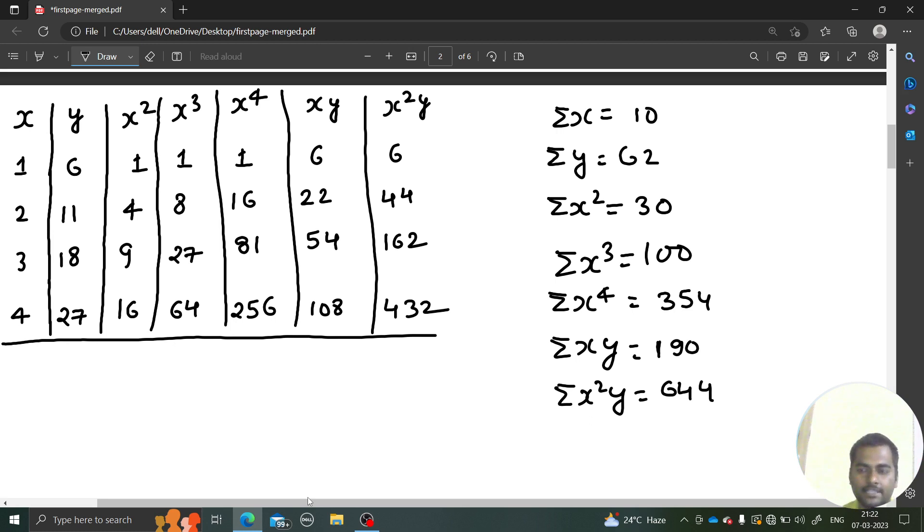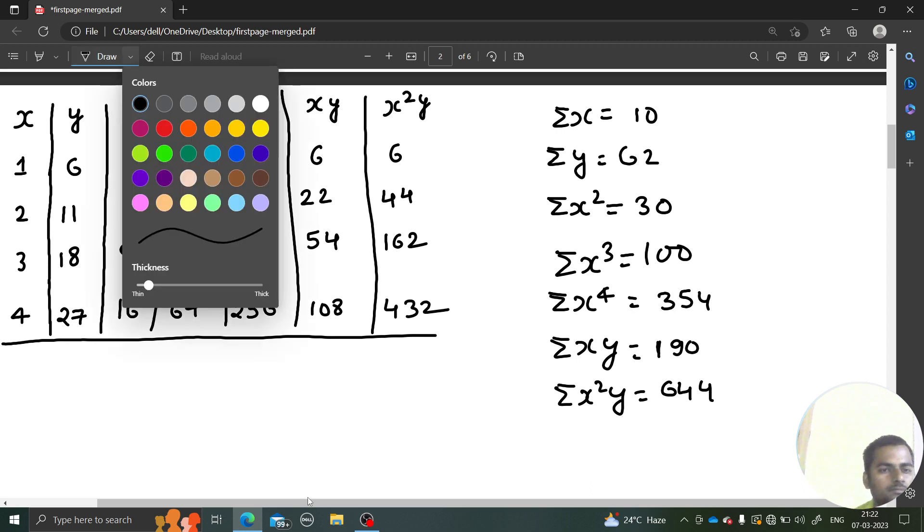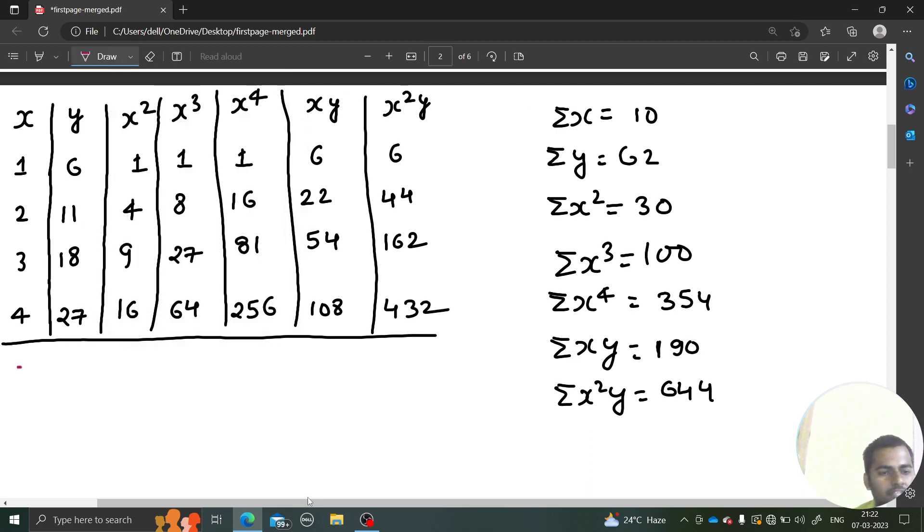Let's plug in this value. First was summation y equals to n a plus b times summation x plus c times summation x square. Summation y is 62, n equals to 4, so 62 equals to 4a plus 10b plus 30c. There you get your first equation.